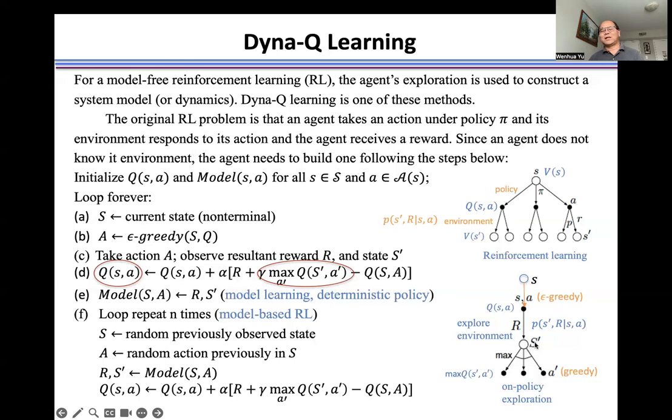That means we need to try different s prime to find the good model. Because we try many times by our experience, then we find the better or good s prime. And then we generate this model. This part, once we have the model, we can evaluate Q value for given state and selected action.